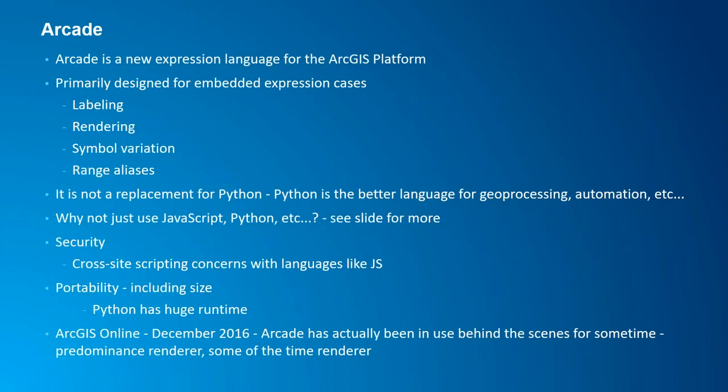Arcade is a new expression language — I believe it came out around Pro version 1.4. It helps you with labeling, rendering, and creating symbols based on different attributes within your data. This doesn't replace Python in any way — Python is still used for geoprocessing, automation, and scripting — but Arcade is a nice way to automate and set up different types of rendering. It's technically been behind the scenes in ArcGIS Online since 2016, and we're supporting it even more now across our platform.